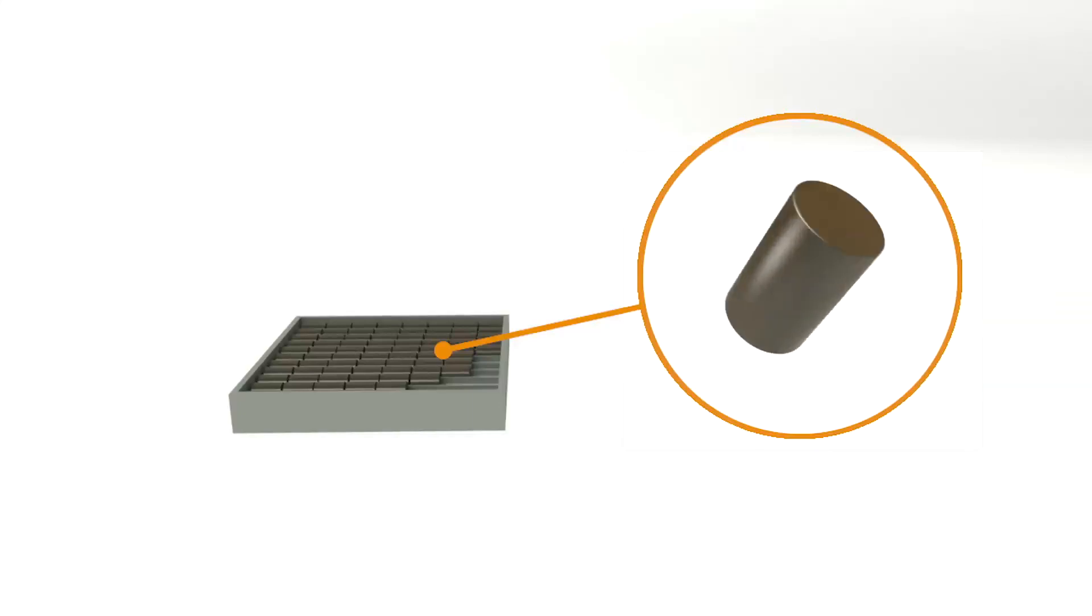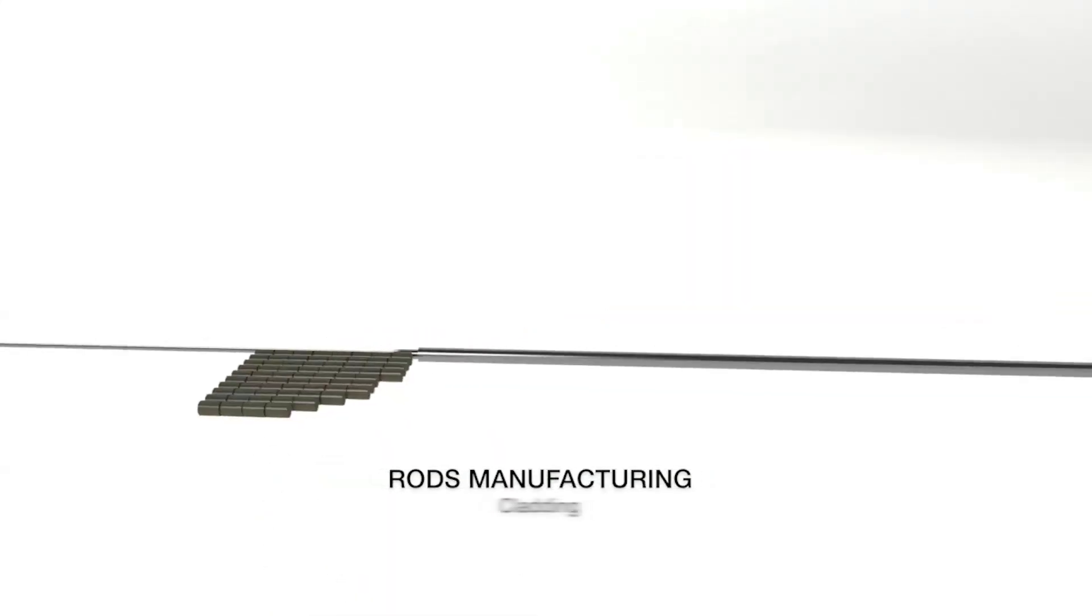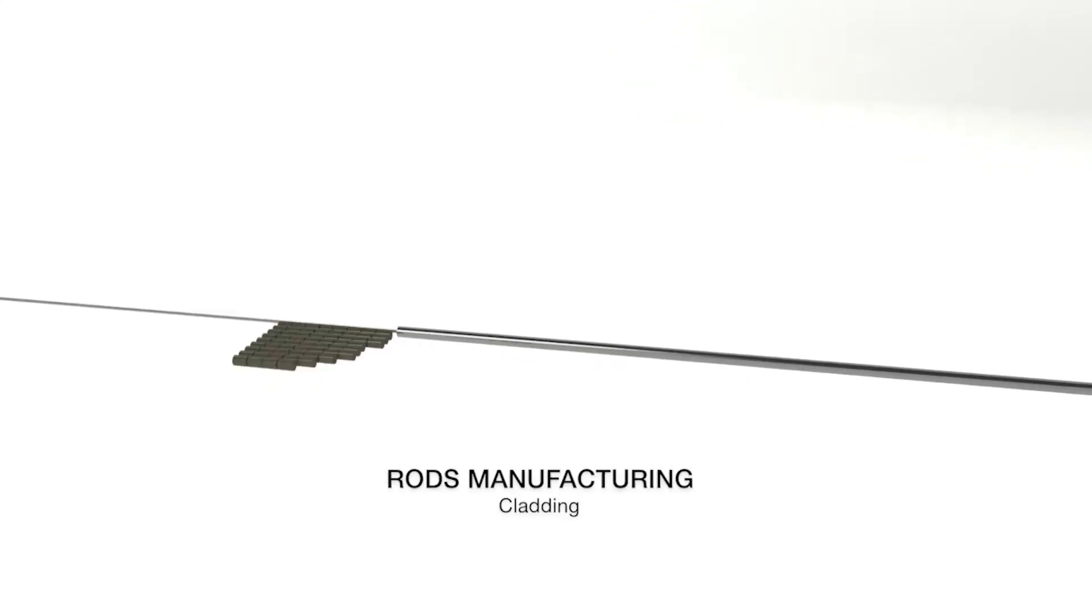The compliant pellets are loaded into metal tubes to form rods. One rod contains an average of 300 pellets.